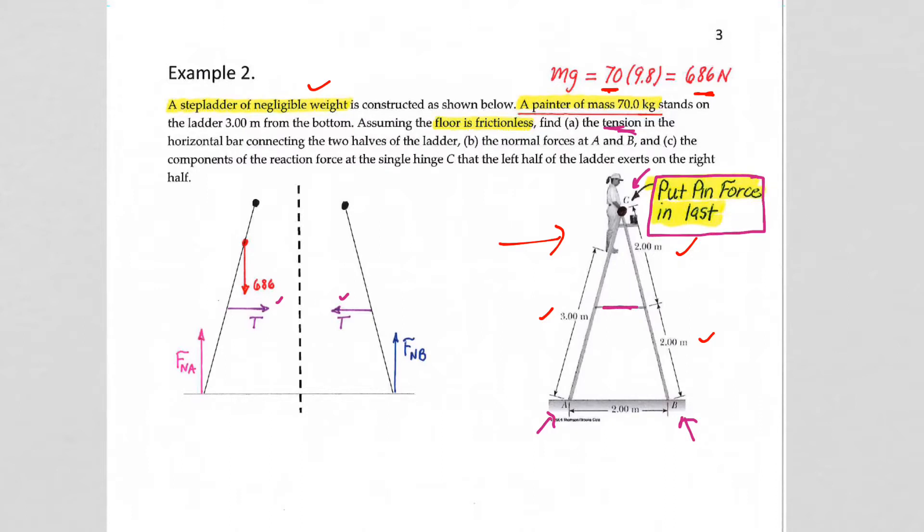Well, I like to put gravity in first, if there's gravity to be had. The ladder itself is massless, but the painter has mass, and we're saying that it acts where her feet are, so the mg of the painter is right here, so that's our 686 newtons we have here.